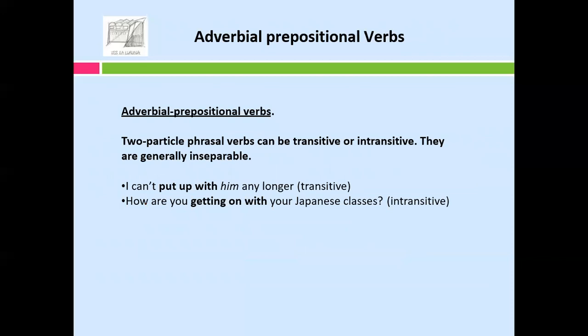Two-particle phrasal verbs can be transitive or intransitive, and they are generally inseparable. For example: 'I can't put up with him any longer' — intransitive. 'How are you getting on with the Japanese classes?' — intransitive. Both phrasal verbs, 'put up with' and 'getting on with,' are inseparable.